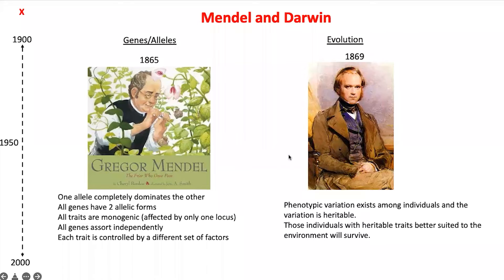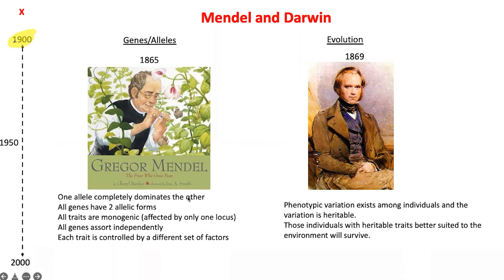Even though Mendel's discovery, after many decades of work, was published in 1865, it was only around 1900 that there was a sort of rediscovery of Mendel's work. Many people tried to reproduce these experiments — they succeeded in many cases, but in many other organisms they failed. Some traits worked, some traits didn't. The traits which followed his laws, today we call that set of genetics Mendelian genetics.